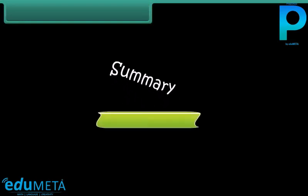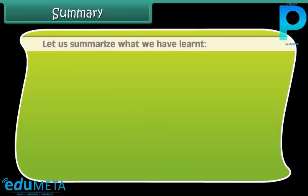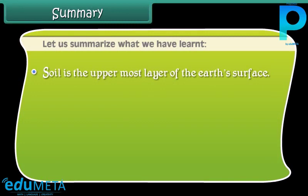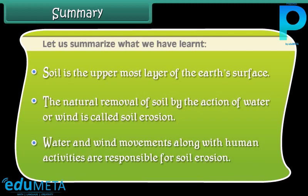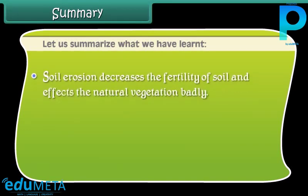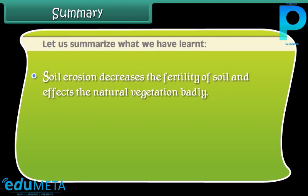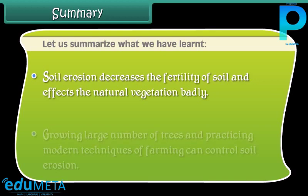Summary: Soil is the uppermost layer of the earth's surface. The natural removal of soil by the action of water or wind is called soil erosion. Water and wind movements, along with human activities, are responsible for soil erosion. Soil erosion decreases the fertility of soil and affects natural vegetation badly. Growing a large number of trees and practicing modern techniques of farming can control soil erosion.